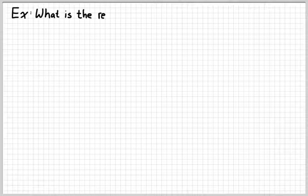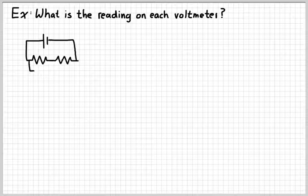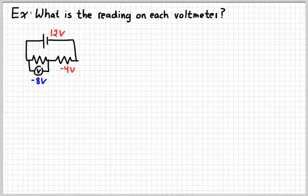Let's look at some more examples. The question this time is: what is the reading on each voltmeter in the circuit? Start with a relatively simple circuit — a 12 volt battery and one resistor whose voltage drop is negative 4 volts. In order for the net to be zero going through the loop, the voltmeter would have to read negative 8 volts.